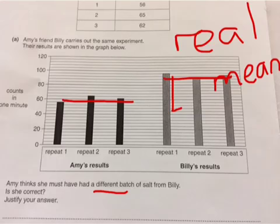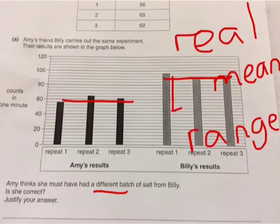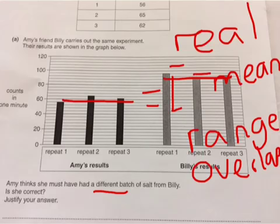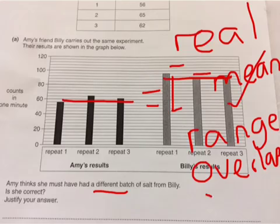The second thing you need to look at when talking about a real difference is the ranges — and in particular, whether or not they overlap. Amy's results range from 58 up to 63. Billy's results range from 86 up to 106. You can clearly see that these ranges do not overlap at all; the range bars are not crossing in any way. So when answering this question, you need to state that the means are very different, and that the ranges do not overlap. That means Amy does have a different batch of salt from Billy.